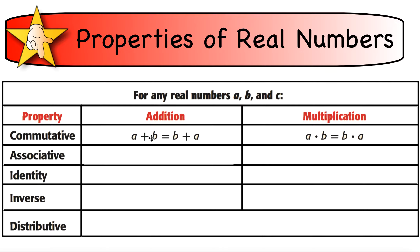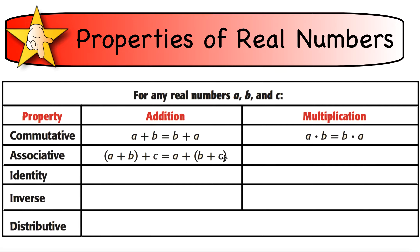For example, 3 plus 4 is the same as 4 plus 3 — both give you 7. And 3 times 4 is the same as 4 times 3 — both equal 12. The associative property involves three things and has to do with grouping. Notice they're in the same order — A, B, C and A, B, C — but we're grouping the first two versus the last two. It doesn't matter how you group them; you'll get the same answer. Same thing applies for multiplication.